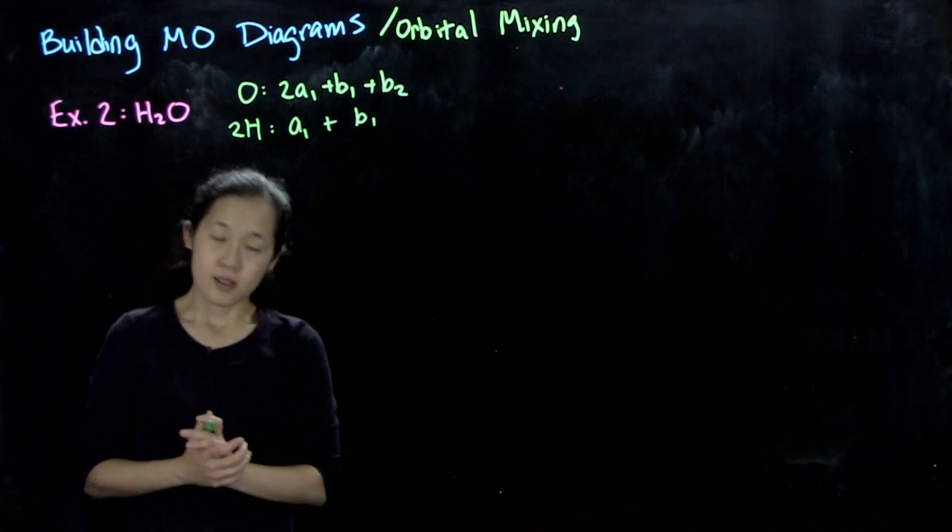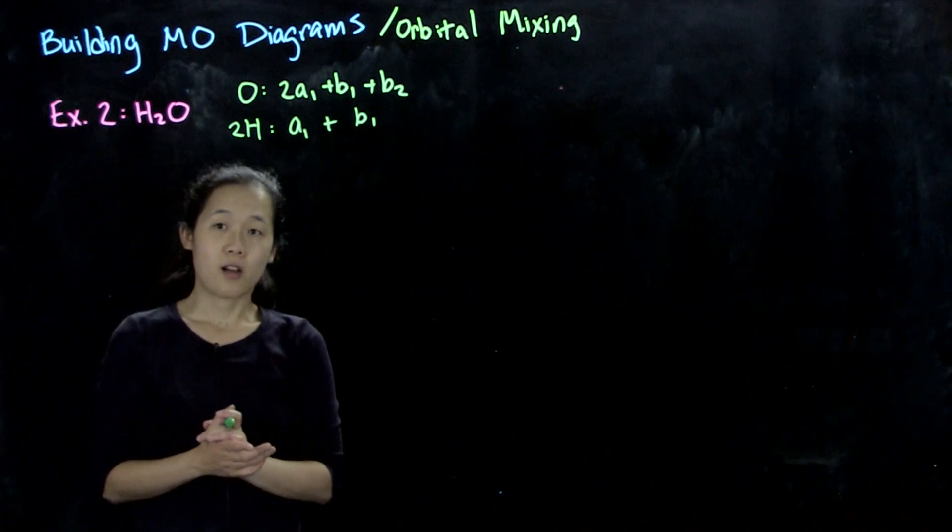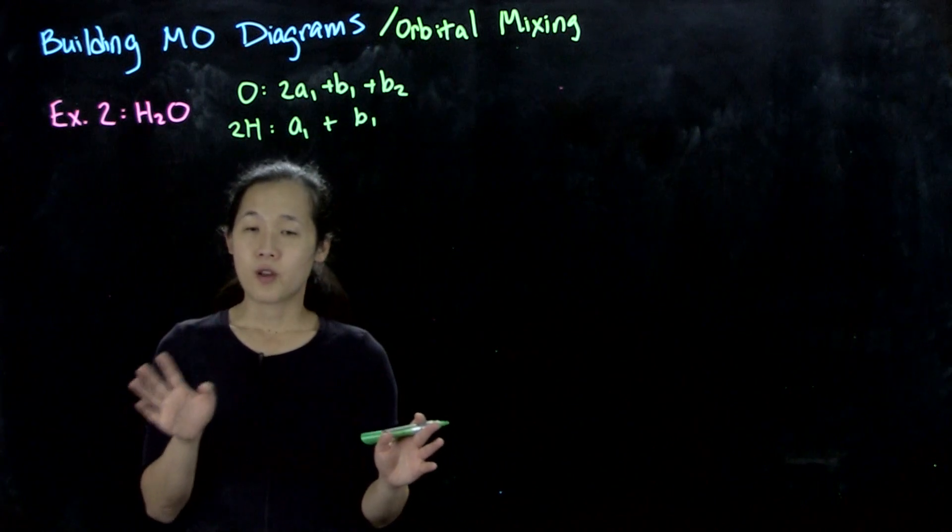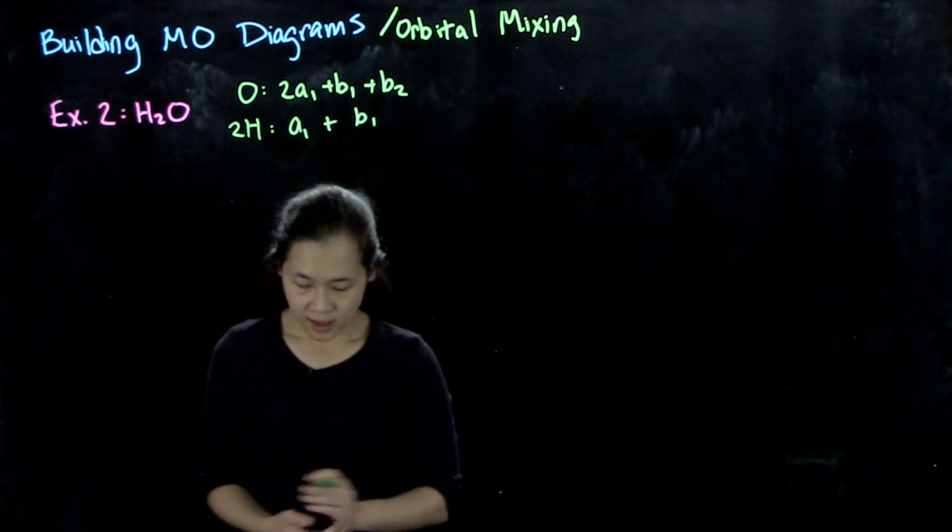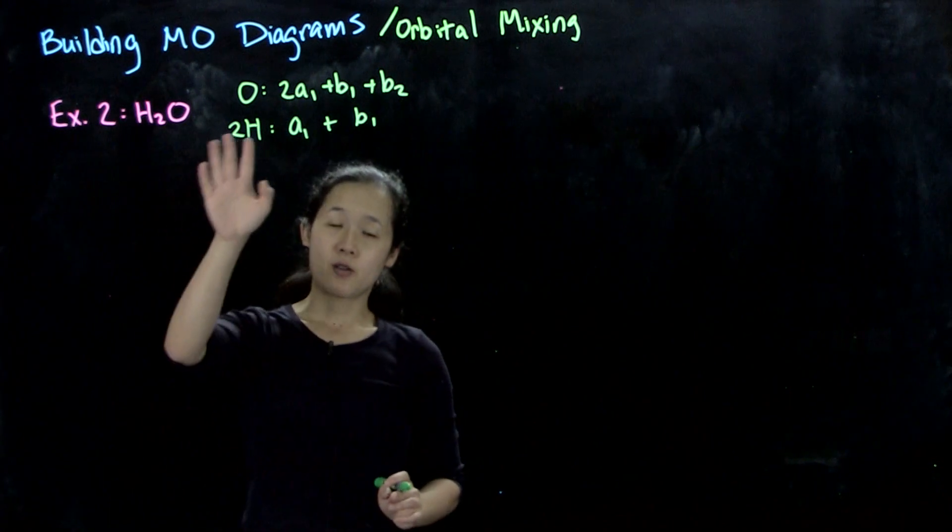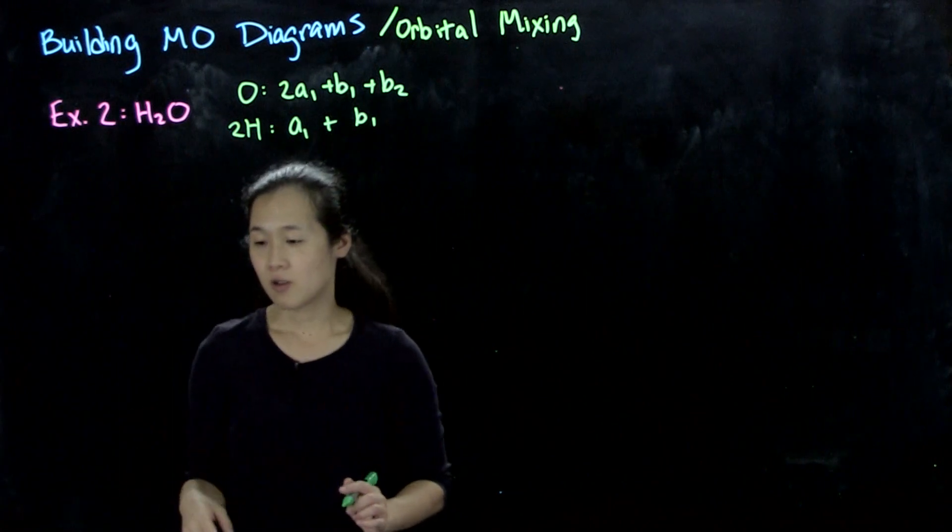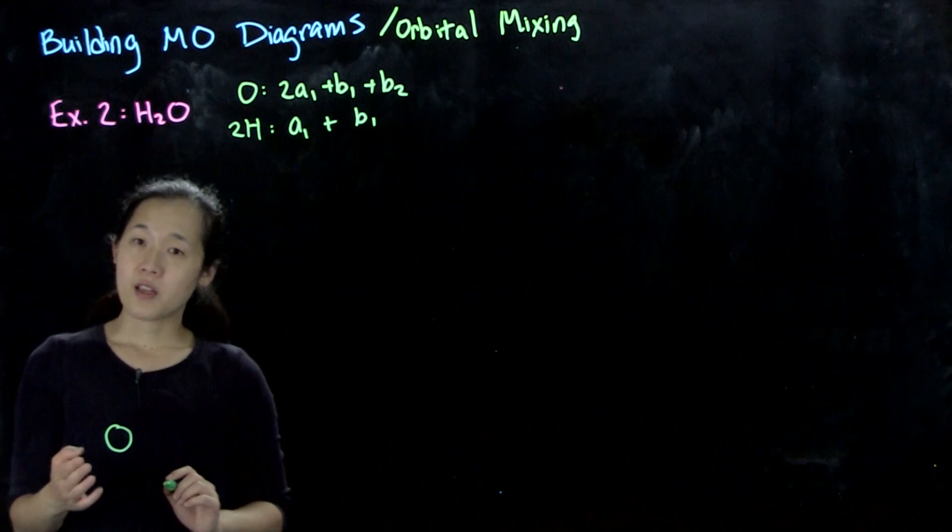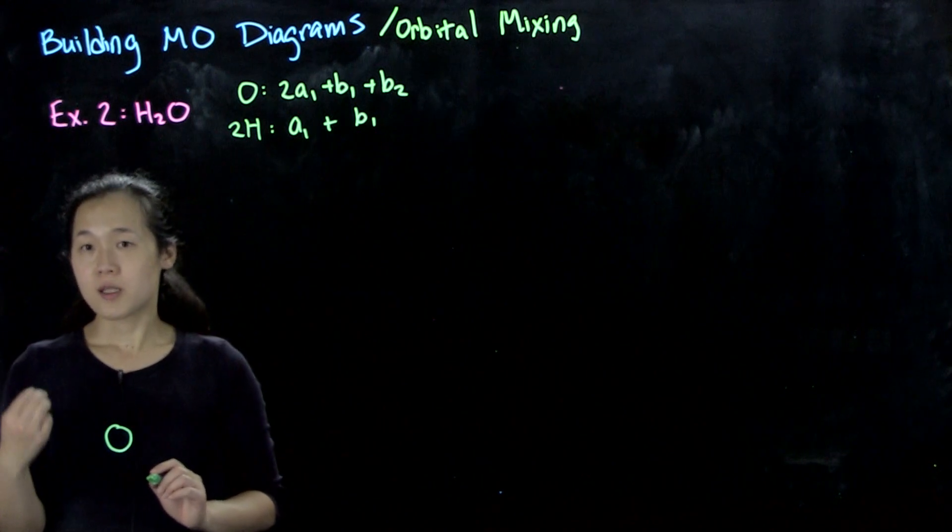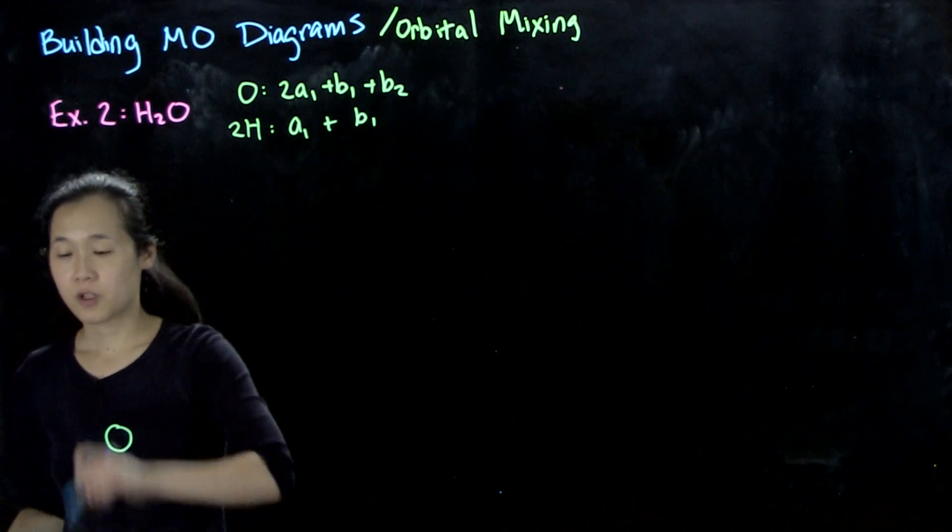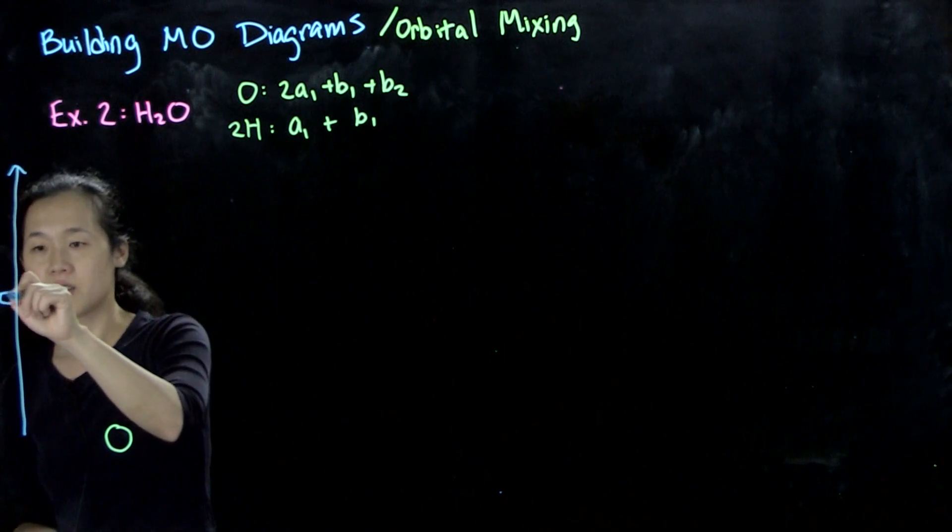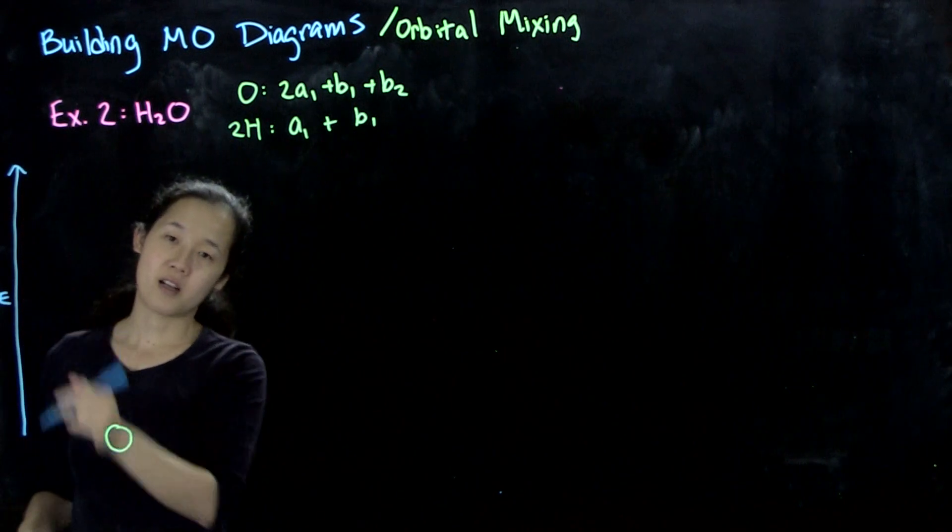When we start building our MO diagram, step one is to start with our atomic orbital energies. When you have a central atom, I like to put it on the left side. We'll put our oxygen atom over here. We want to think about the energies of our orbitals going up in energy. This is an energy axis.